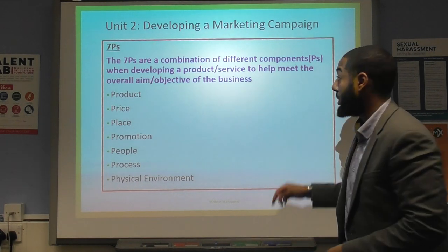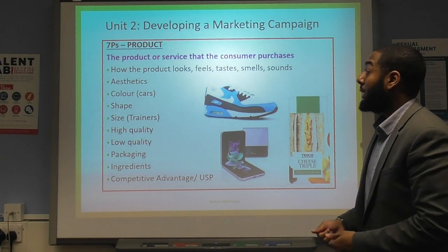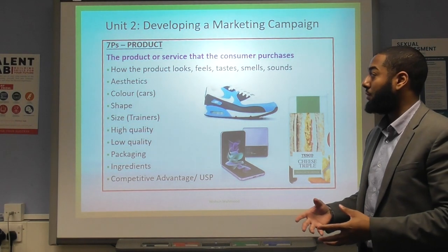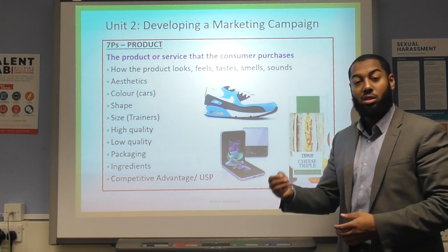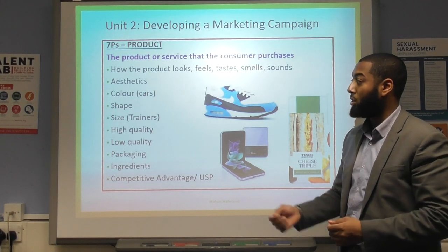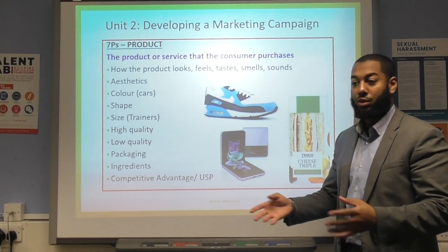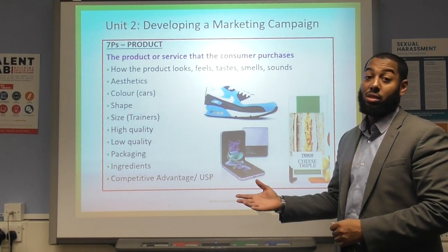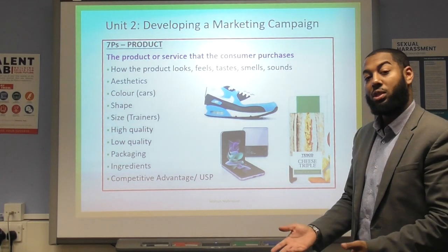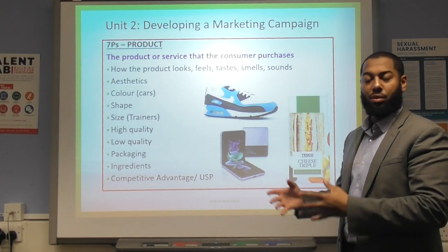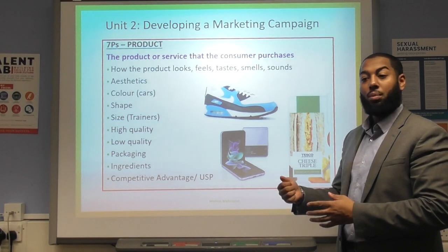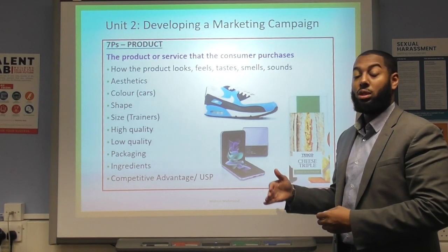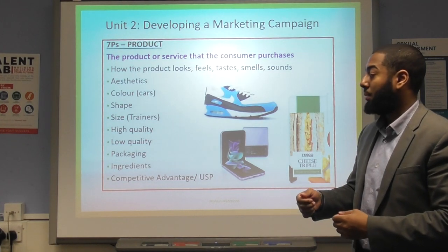The first P is product — the product or service that the consumer purchases. When explaining product, we should think about how the product looks, feels, tastes, smells, and sounds. We look at the aesthetics: what color is it — for example, cars come in different colors for different people — what shape does it have, and what sizes are available, like children's, baby, and adult sizes for trainers. We also look at quality: is the product created with high or low quality materials? Higher quality materials justify a higher price.